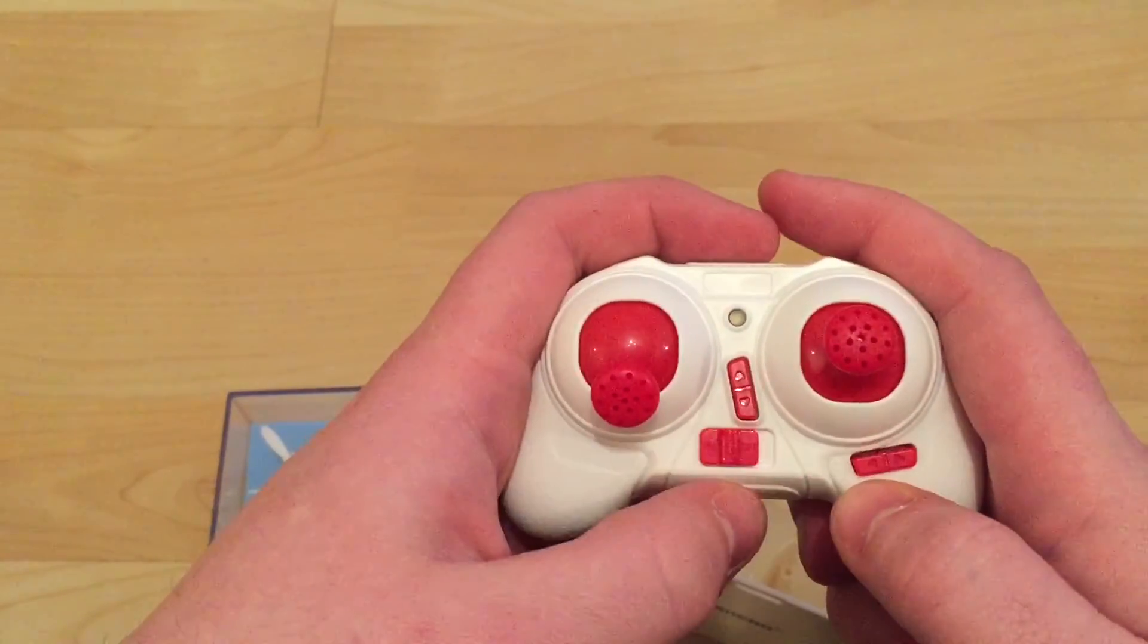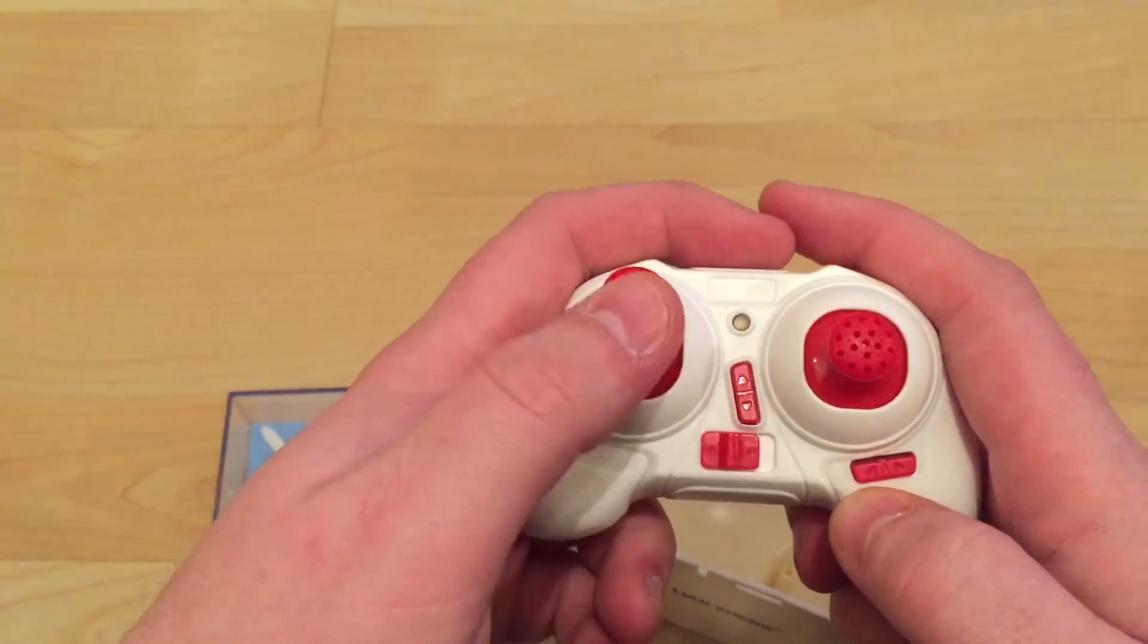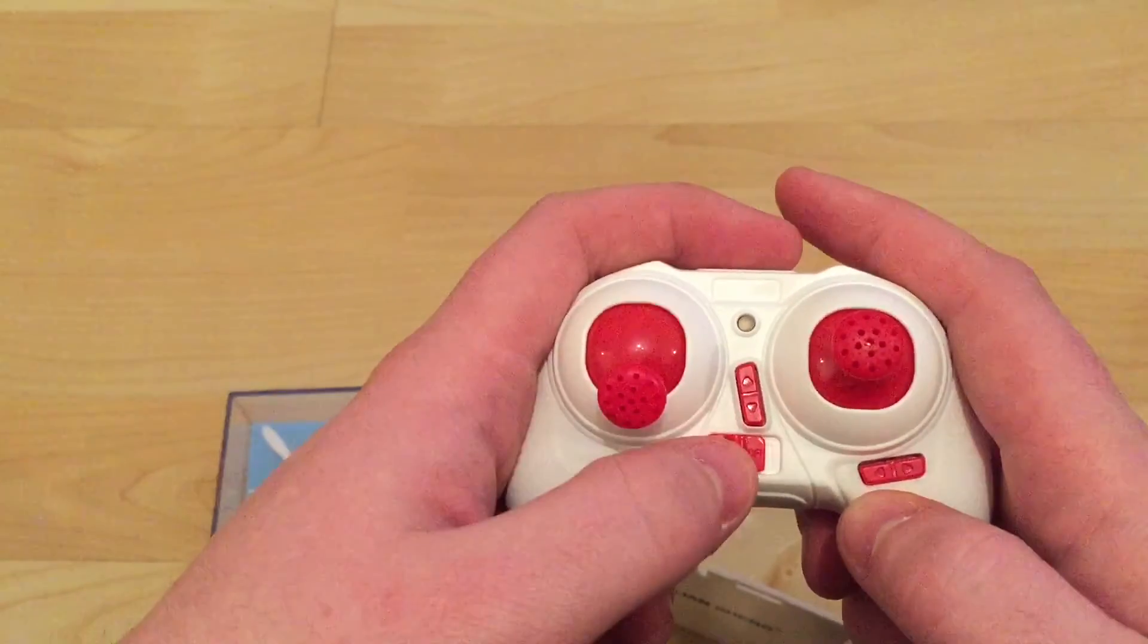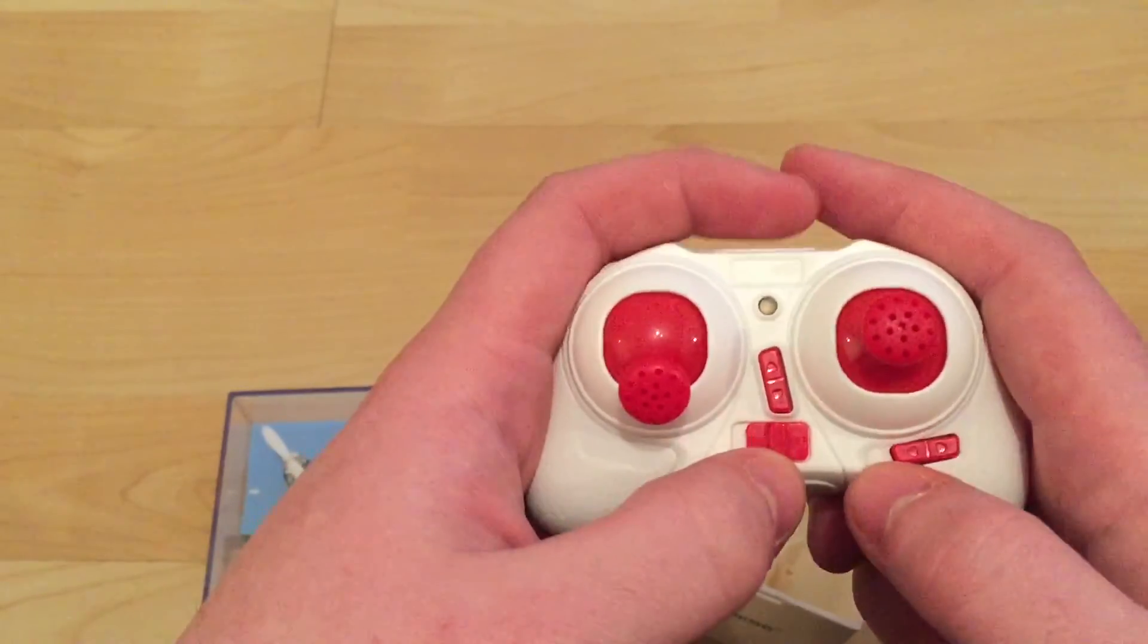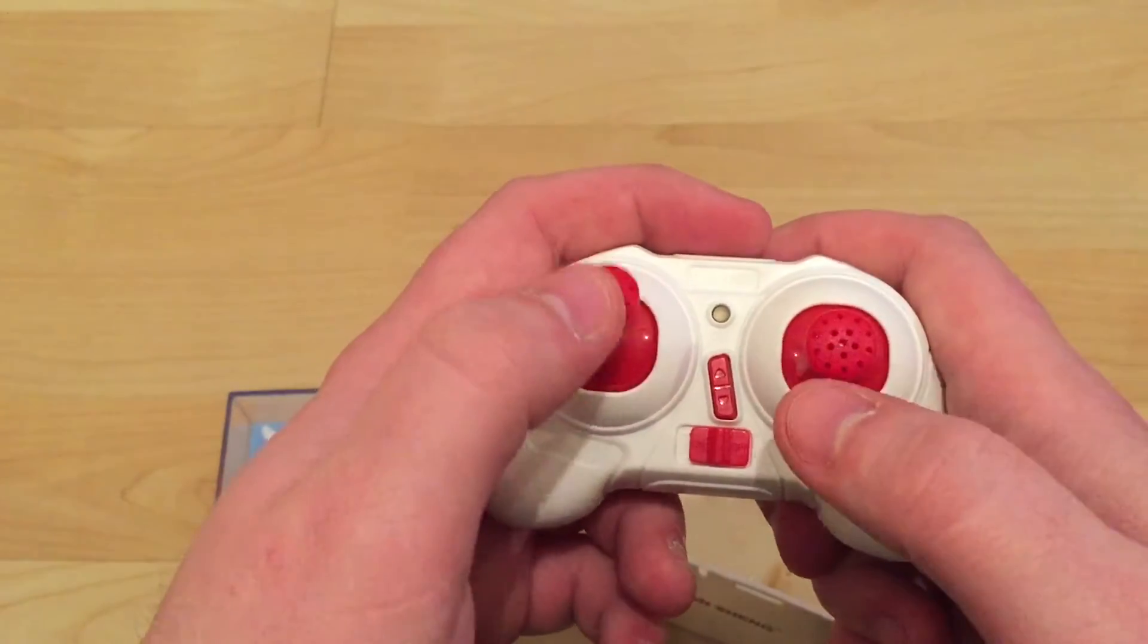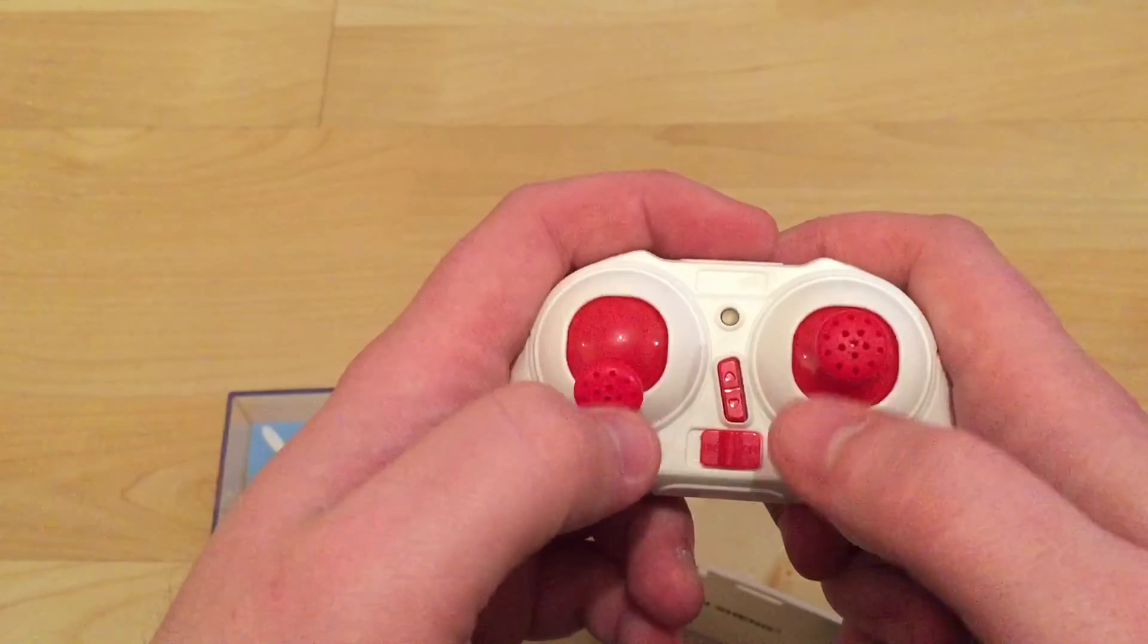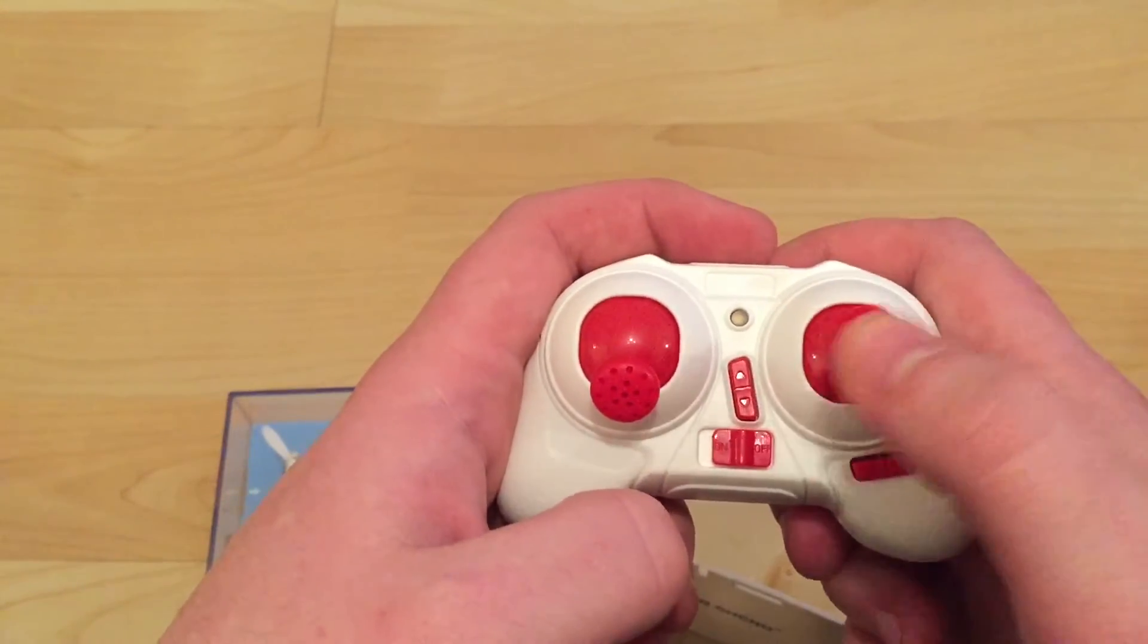So same as before, switch it on, and then it's up and down to sort of calibrate it to the quadcopter. You have forward, back, left, and right trim buttons, and then it's ascend and descend, turn left and right, forward, back, and then straight left and right.